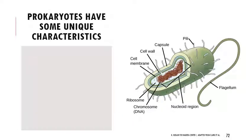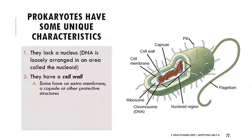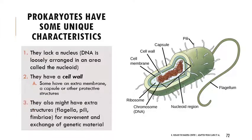Bacteria don't just give DNA to their offspring — they swap DNA in a lot of different ways, so it's hard to study them both structurally and genetically. Among the prokaryotes, thinking about their structure, all prokaryotes lack a nucleus. They have DNA arranged in a circular chromosome, aggregated into an area of the cell called the nucleoid, but they do not have a membrane-bound nucleus. They also have a cell wall. Some have an extra plasma membrane in addition to the cell wall, and they might have a capsule or other protective structures. They also have extra structures for movement, like flagella and pili. Fimbriae are used for colonization, forming biofilms, and infecting the gut.